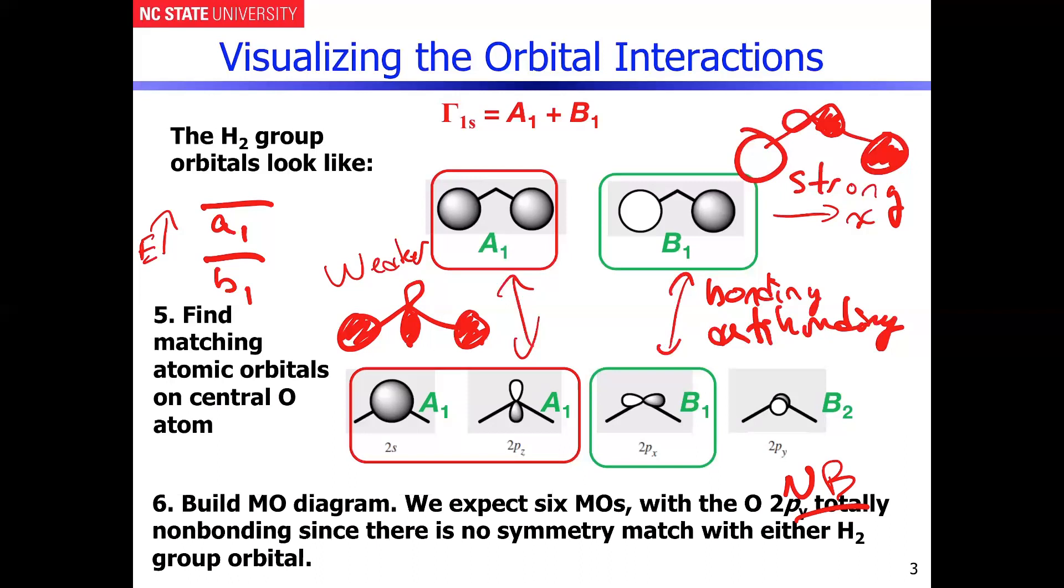So that will be non-bonding. So ultimately, when we build this MO diagram, you can kind of see here that we have one, two, three, four, five, and six different orbitals that are going to actually have to be combined to make the molecular orbitals. So basically, that's the simple idea that we will generate six MOs as a result.